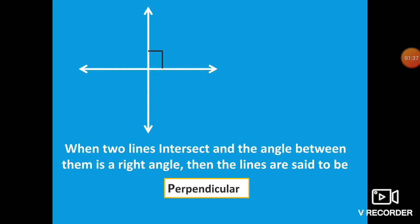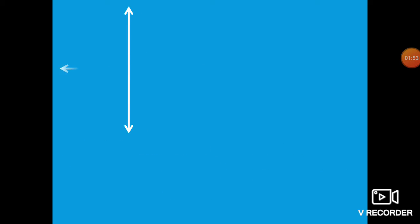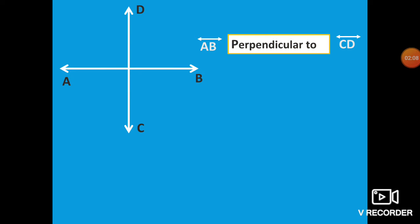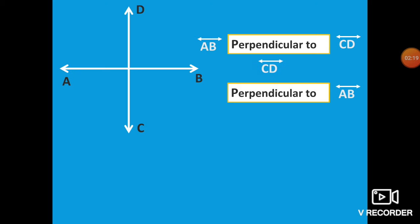This type of lines are called Perpendicular Lines — they intersect at a point and form a right angle or 90 degree angle. Here is a vertical line named AB and a horizontal line named CD. Line AB is perpendicular to Line CD. In another way, we can say Line CD is perpendicular to Line AB. Both are the same.